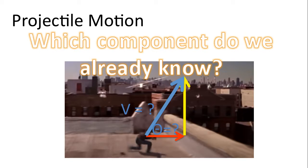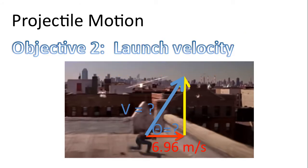Now which component do we already know? Please pause the video now. One of those components we already know. Which component is it? I hope you gave that some thought. We know the x component of velocity 6.96 meters per second. That came from objective 1.